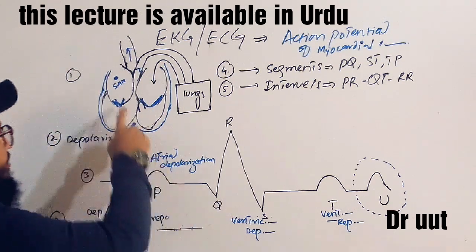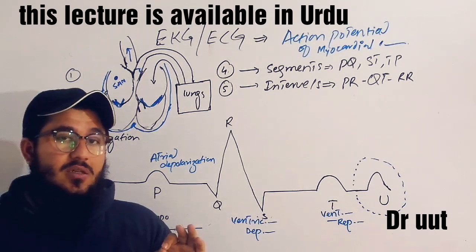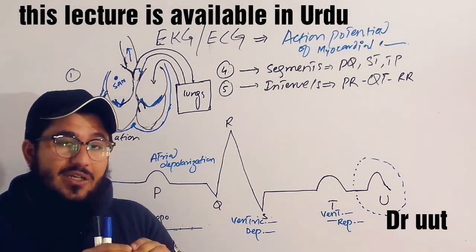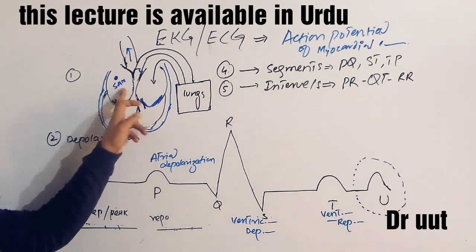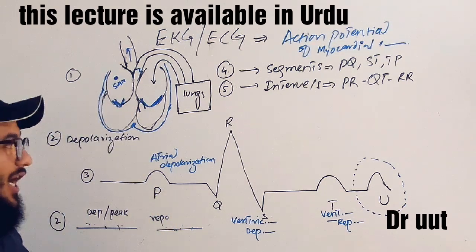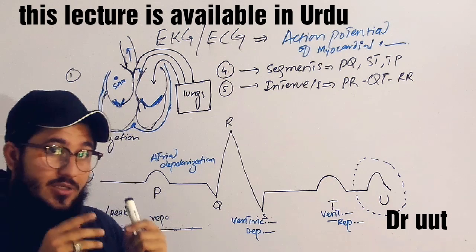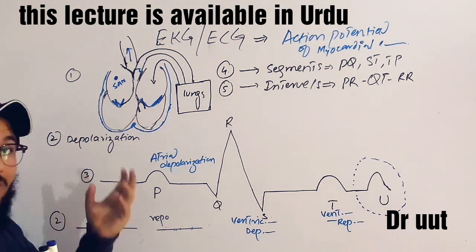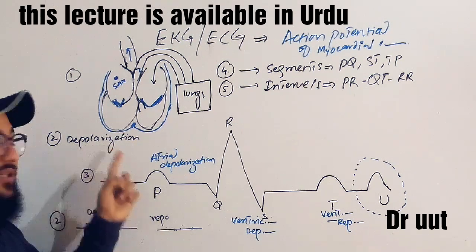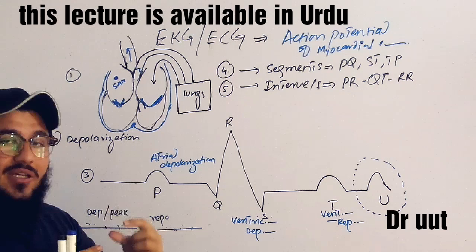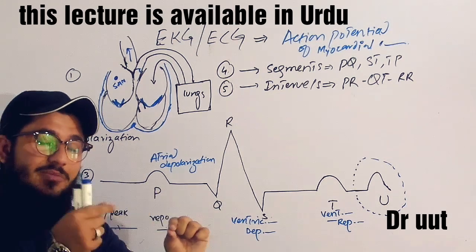Coming to the point of contraction: the sinoatrial node is responsible for generating the pace, or you can say generating the electrical current for the muscles to contract. First of all, the contraction of the atria will happen. We know a cell will contract when it gains a stimulus. When the cell becomes stimulated, we call that cell depolarized. After depolarization, the cell becomes excited and then performs its specific job.